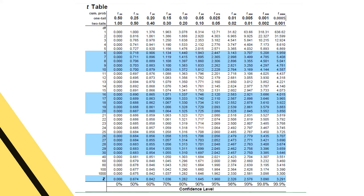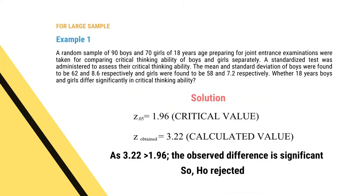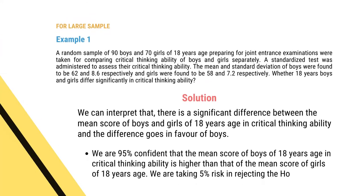From the table, the Z critical value at 0.05 level of significance is 1.96. Our calculated value is 3.22. Since 3.22 is greater than 1.96, the observed difference is significant and the null hypothesis is rejected. There is a significant difference between the mean scores of boys and girls of 18 years in critical thinking ability, with the difference in favor of boys. We are 95% confident the mean score of boys is higher, taking a 5% risk in rejecting the null hypothesis.